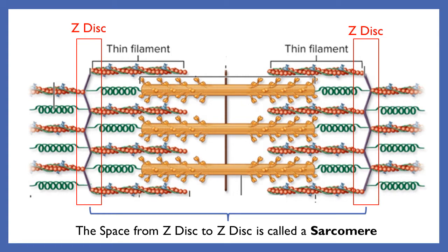Whenever you look at myofilaments, we divide them up into a space called a sarcomere. A sarcomere is a distance — specifically, the distance from one Z-disc to the next.